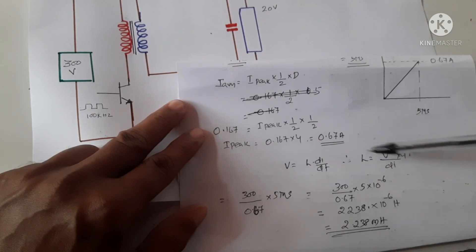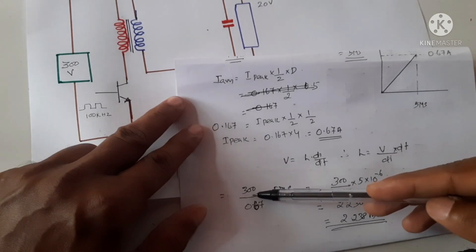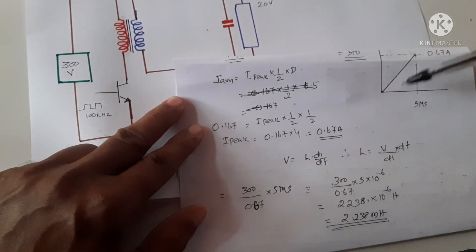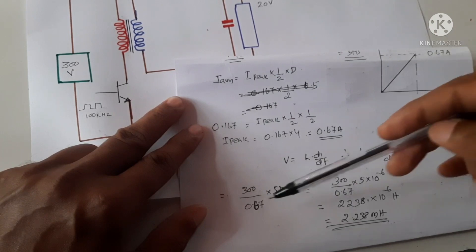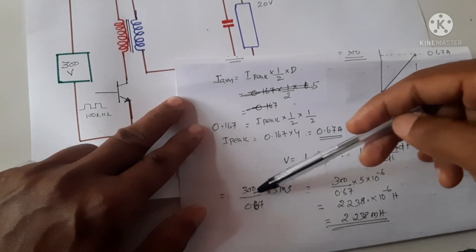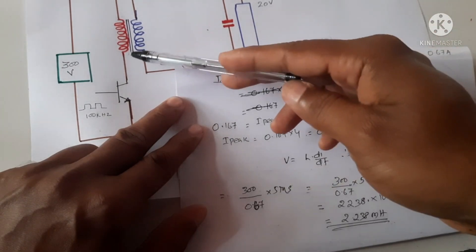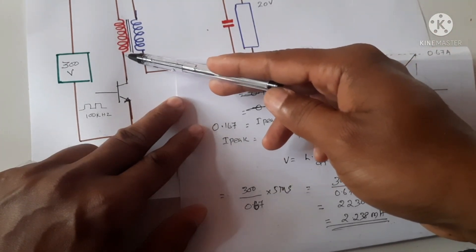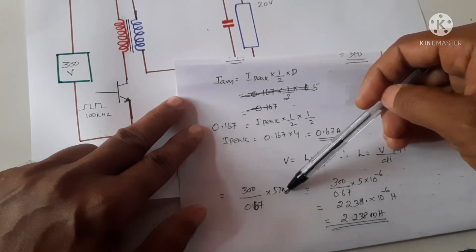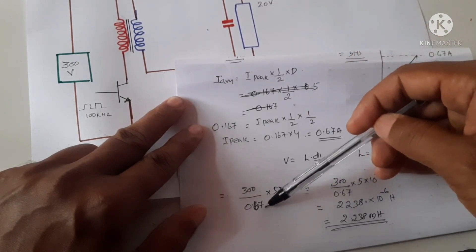Here the input voltage is 300 volts divided by the change in current, 0.67 amperes, that is happening in 5 microseconds. So the voltage will be available across this transistor. The primary of the coil will be 300 volts available for only 5 microseconds. In that time the current has changed from 0 to 0.67 amperes.